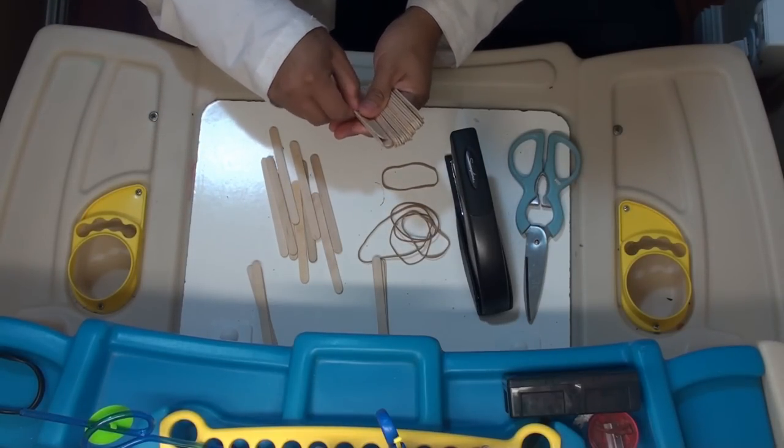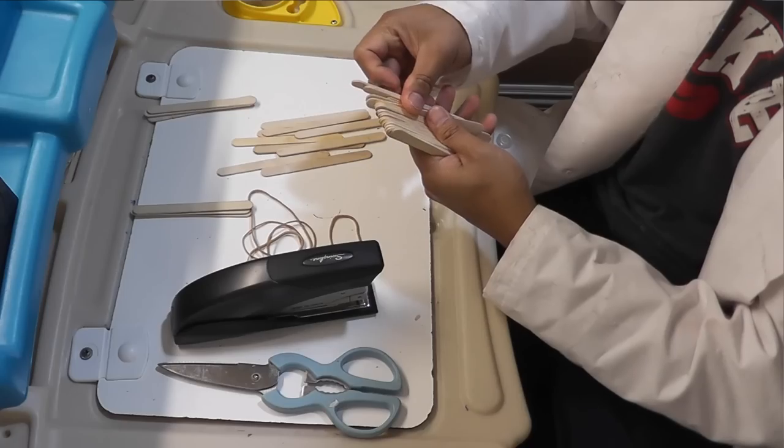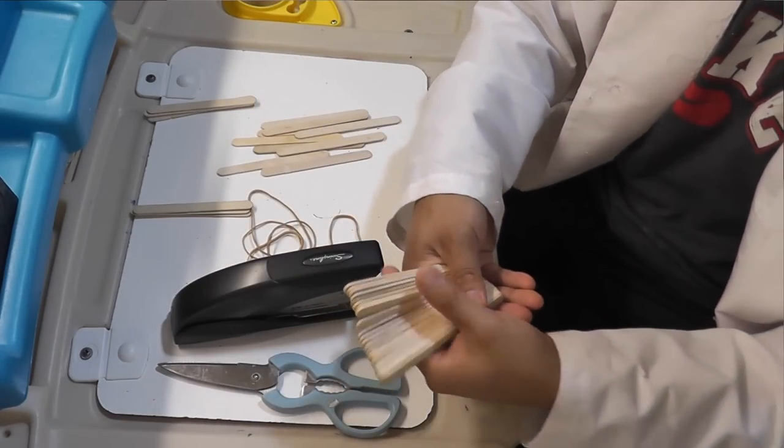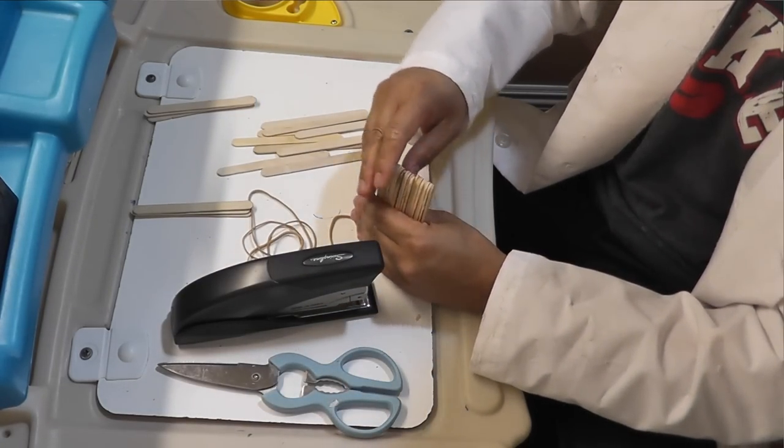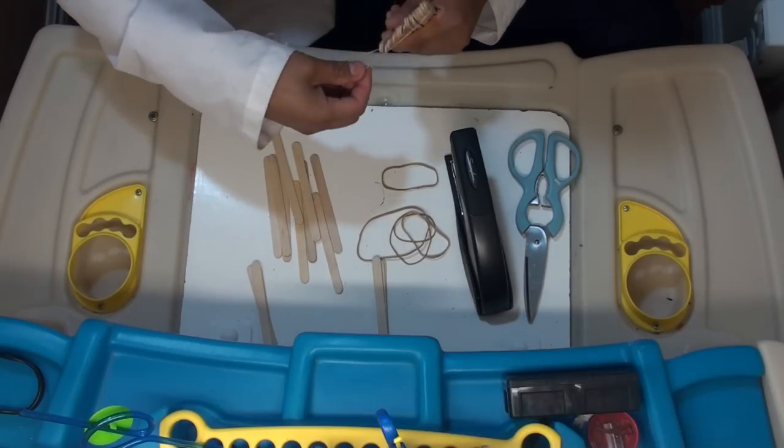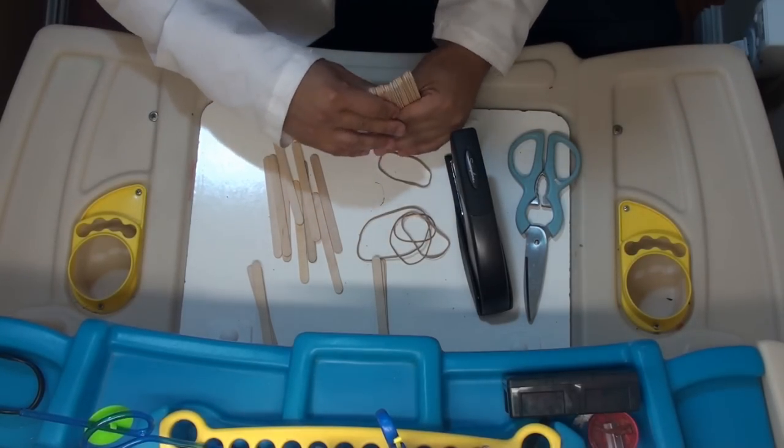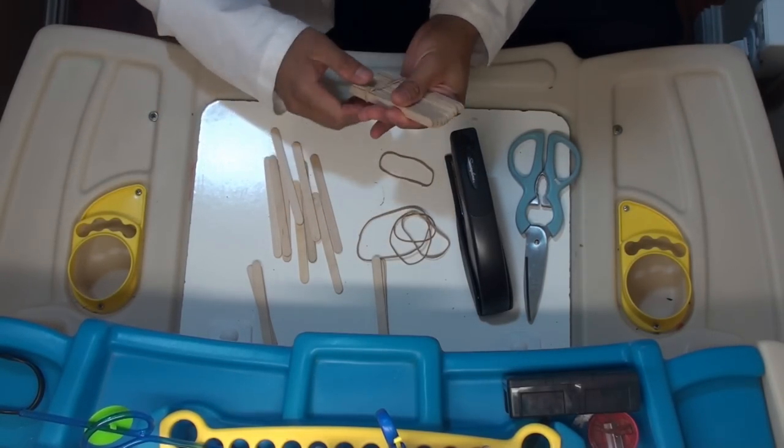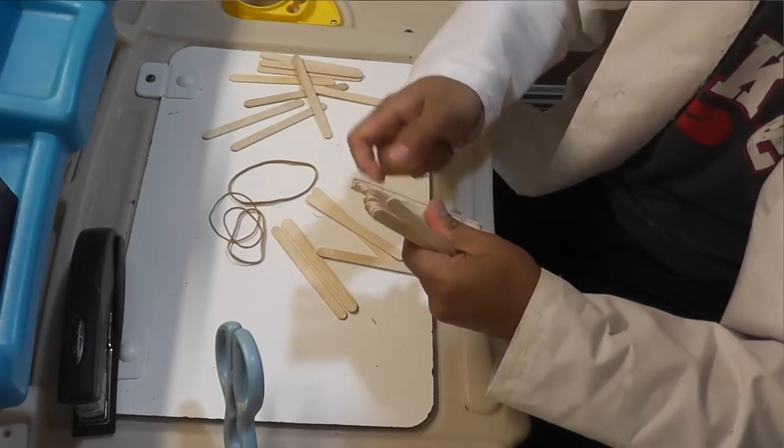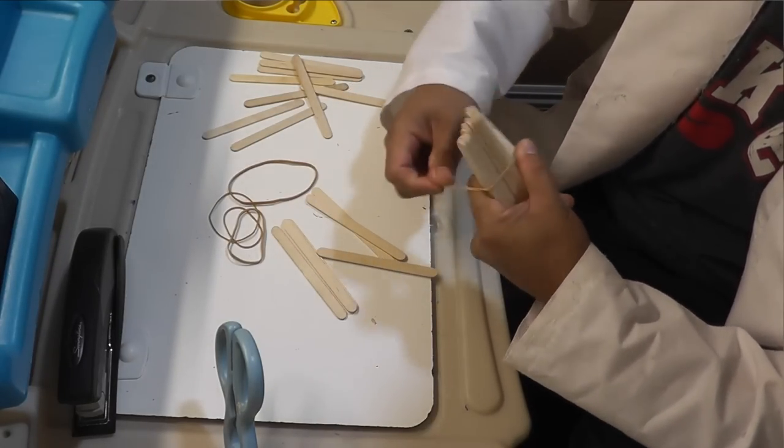You arrange all the popsicle stick like this. And tie them with a rubber band. Like this. And the second one.